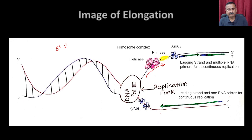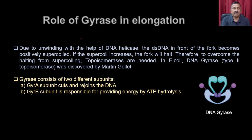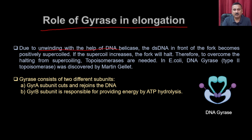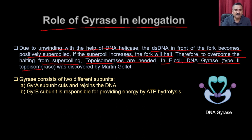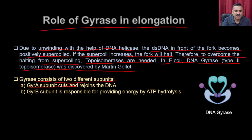Due to unwinding by DNA helicase, the double-stranded DNA ahead of the replication fork becomes positively supercoiled. If supercoiling increases too much, the fork halts. To overcome this, topoisomerases are needed. In E. coli, DNA gyrase (a type 2 topoisomerase) was discovered by Martin Gallet. The gyrase contains two subunits: GyrA (cuts and rejoins DNA) and GyrB (provides energy through ATP hydrolysis).